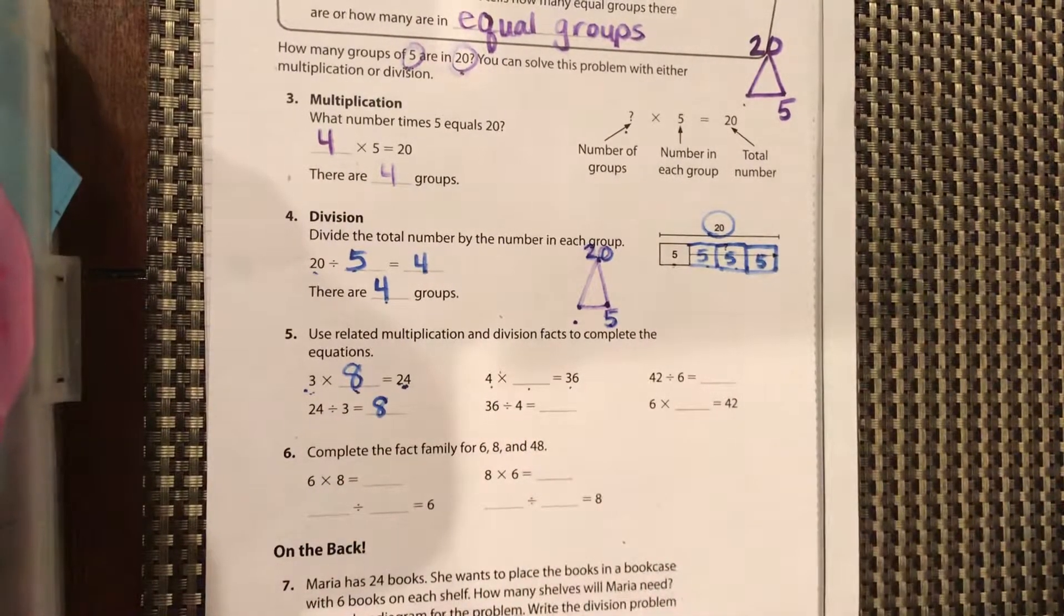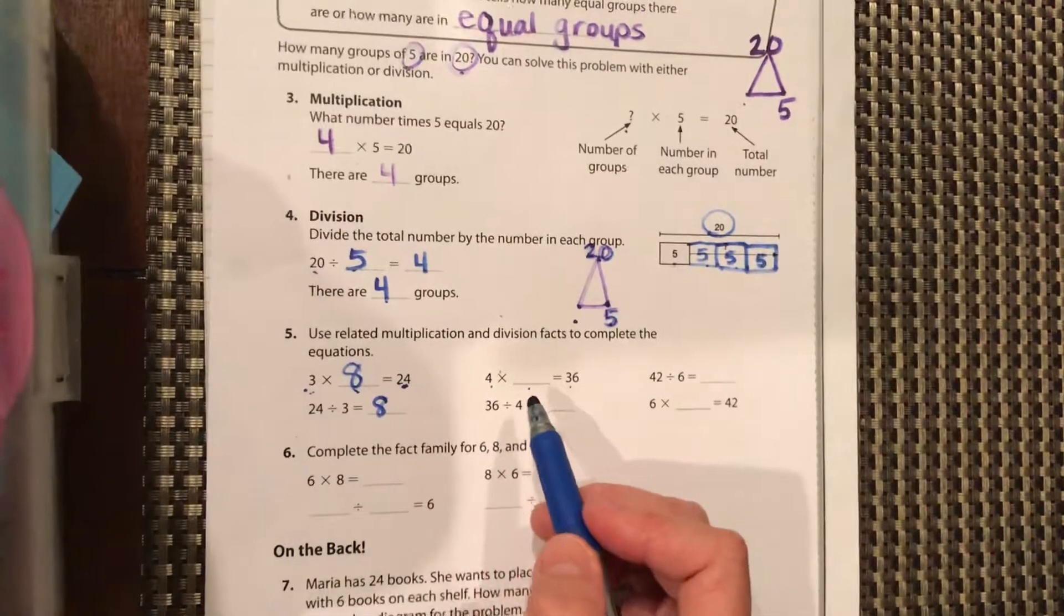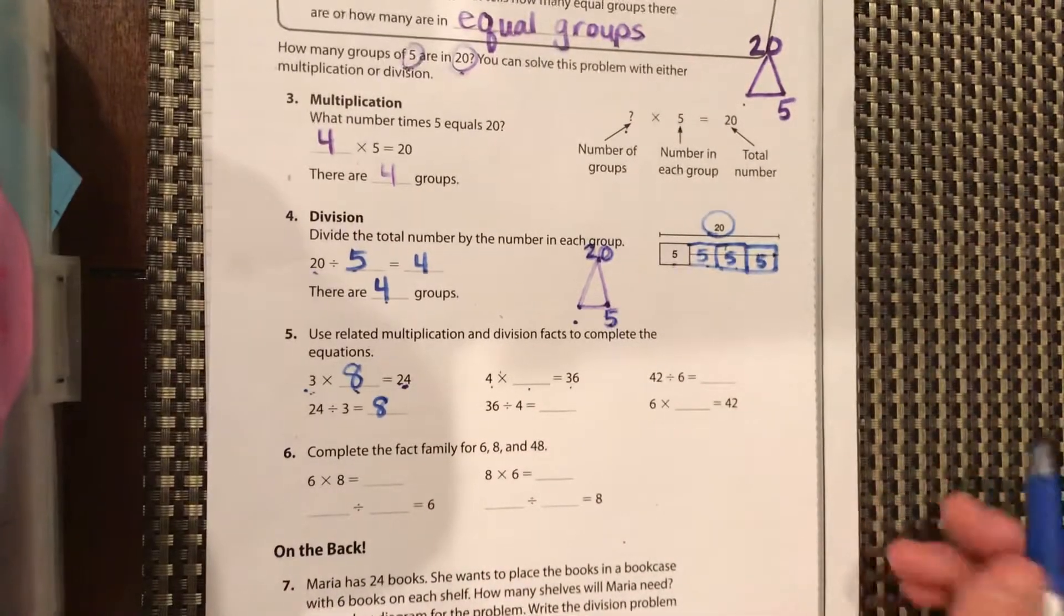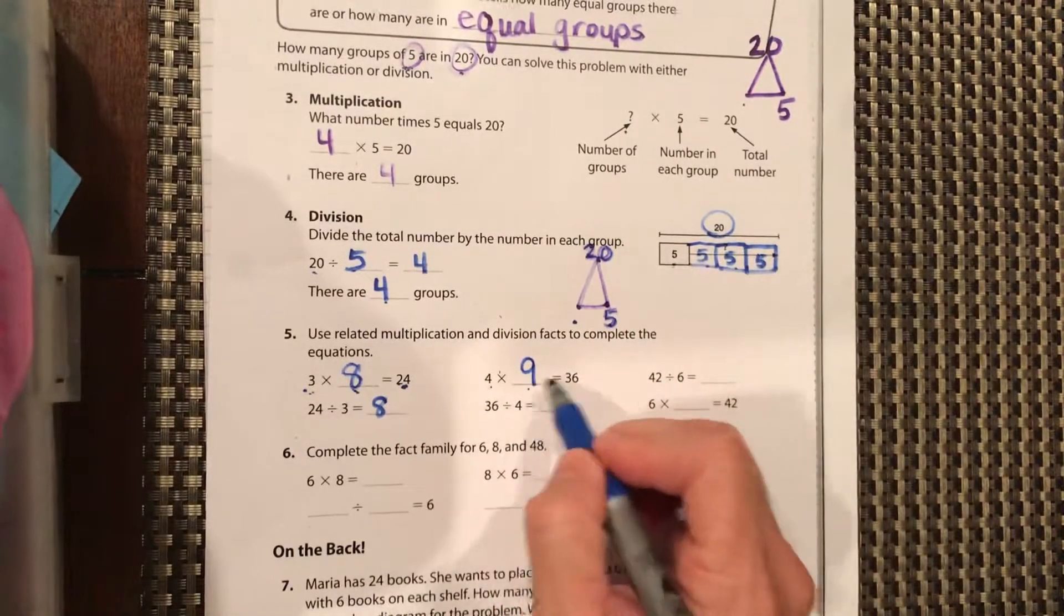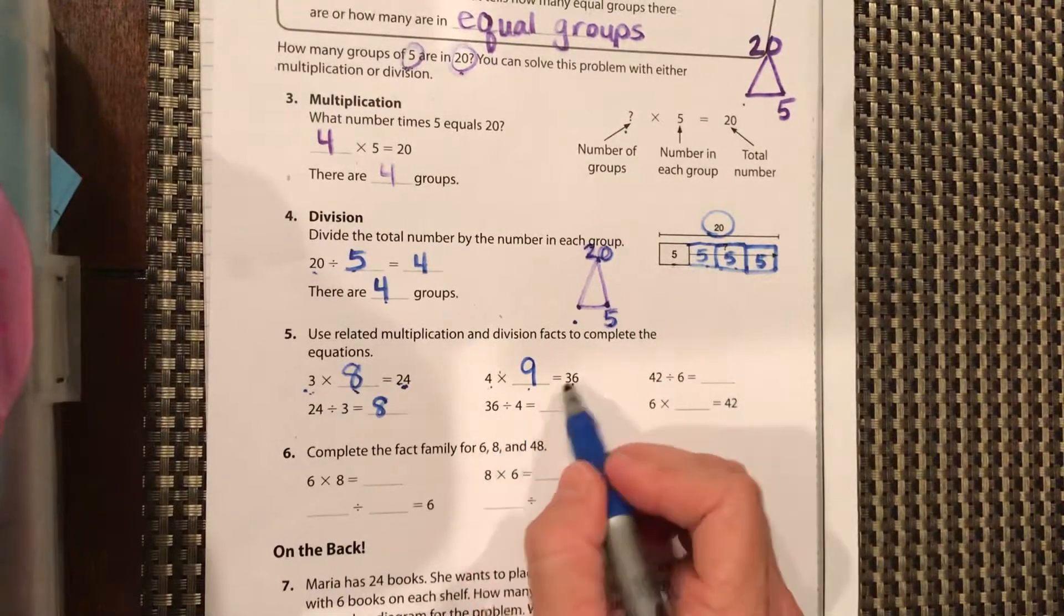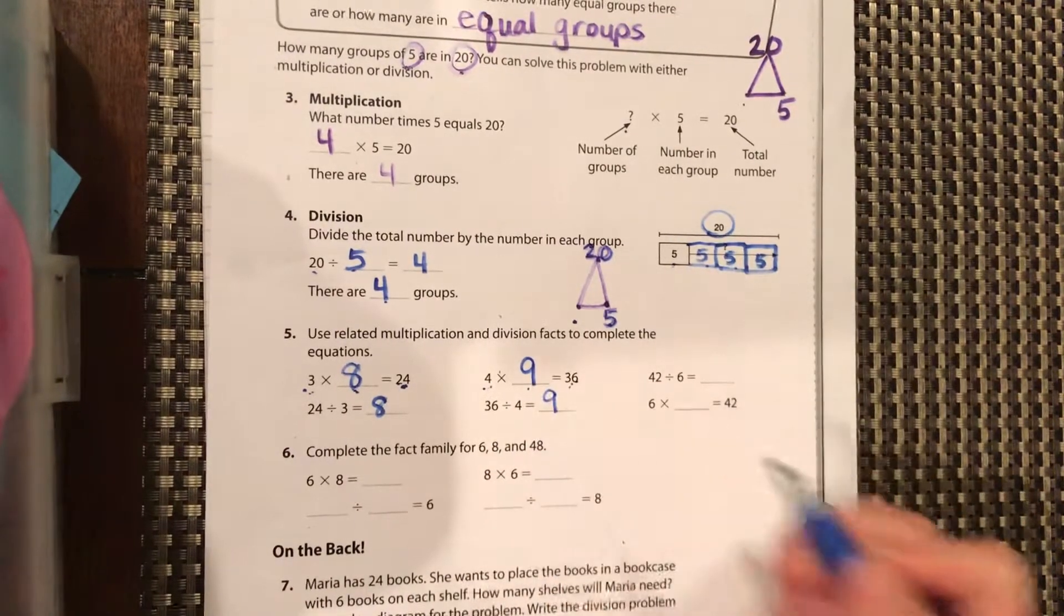Four times what equals 36? Four times 10 is 40, so you know it's going to be a little bit less than 10. Nine. So four times nine equals 36. Then 36 divided by four equals nine.